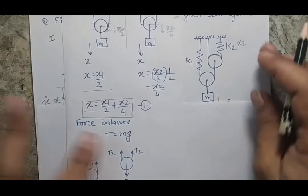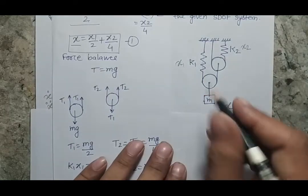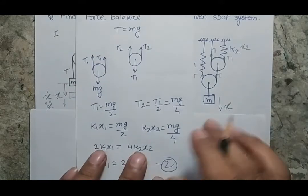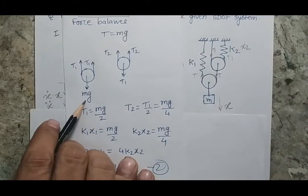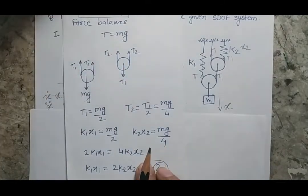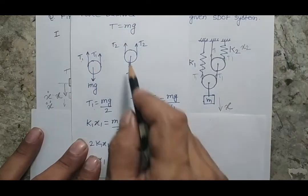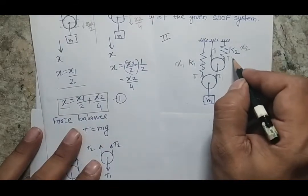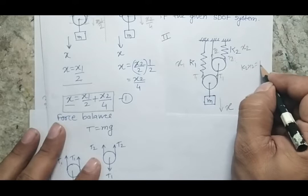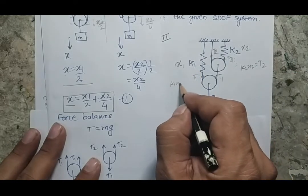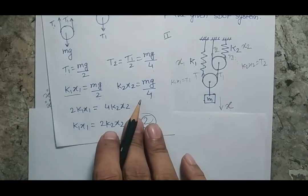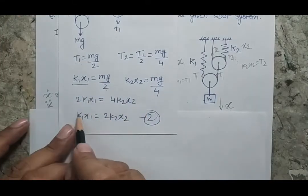Now the second part is applying the force balance. If there is a tension T here there will be a tension T here, and I am assuming the tension at the other location is T1. Making the free body diagram of the two pulleys: for the first pulley there is mg and T1, T1; and T2, T2 for the second. I know that T equals mg, so T1 equals mg/2 and T2 equals mg/4. The spring K1 is subjected to force T1, so K1·X1 equals T1 equals mg/2. The spring K2 is subjected to force T2, so K2·X2 equals T2 equals mg/4. These give me my second expression.